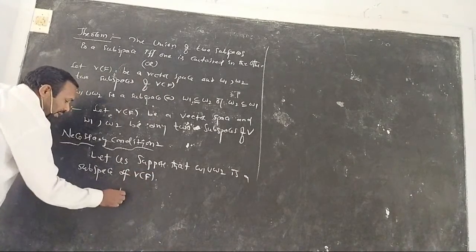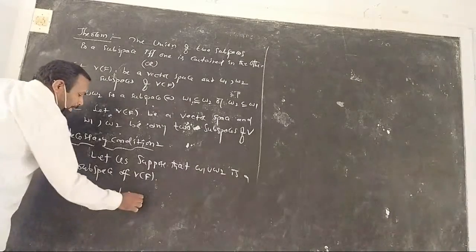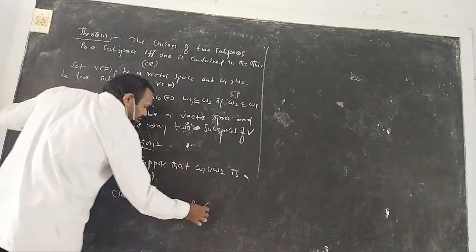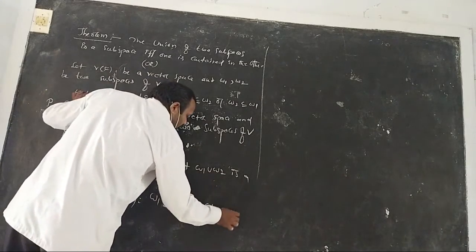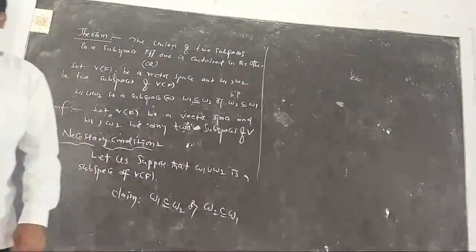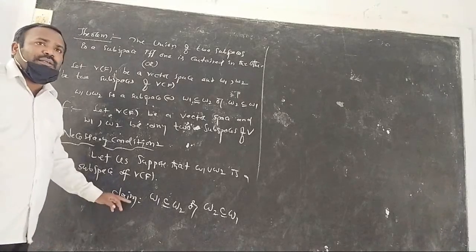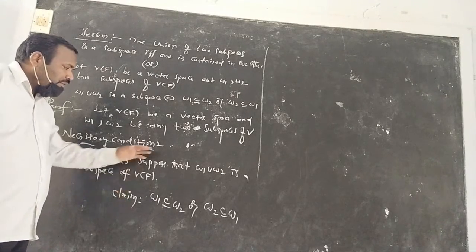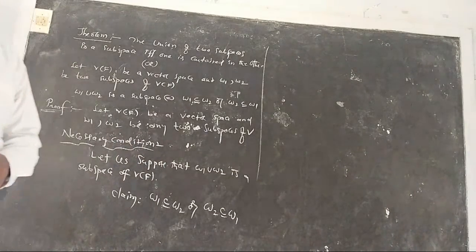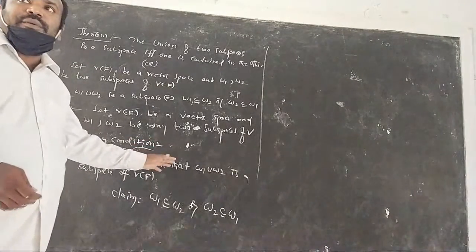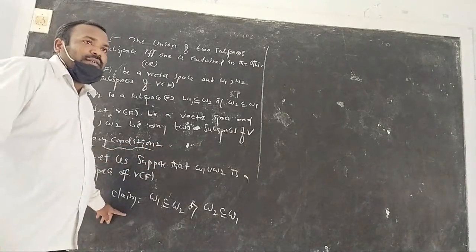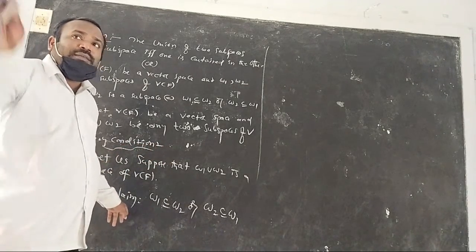What is our claim? We want to show that W2 is a subset of W1, or W1 is a subset of W2. This is to be proved from the assumption that W1 union W2 is a subspace. It has no direct proof — we use indirect proof, proof by contradiction.